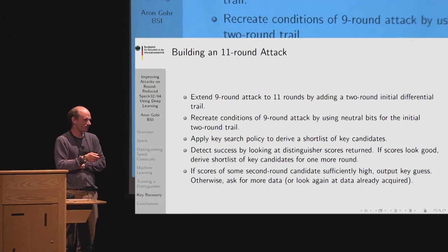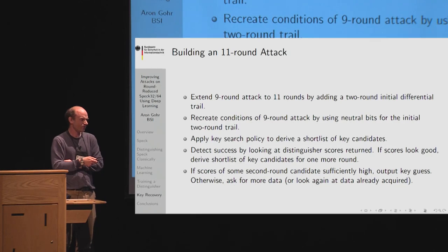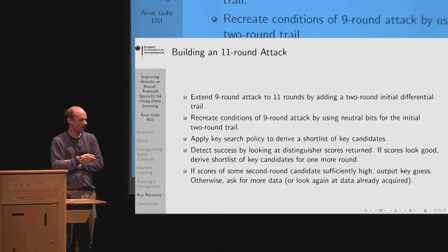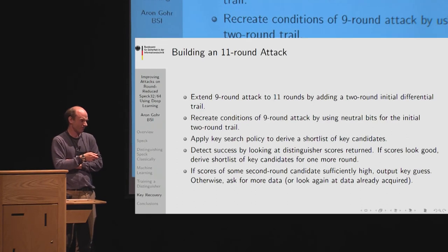To build an 11-round attack, we extend the 9-round attack by adding a 2-round initial differential trail. We recreate the conditions of the 9-round attack — having plaintext pairs with the desired input difference — using neutral bits for the initial 2-round trail. We apply the key search policy to derive a short list of key candidates, detect success by checking distinguisher scores, and if they look good, derive candidates for one more round. Those are judged by another neural distinguisher for one fewer round, and if sufficiently high, we output a key guess for the last two round keys; otherwise, we request more data.